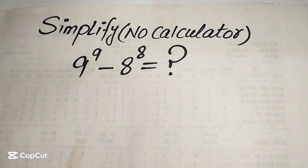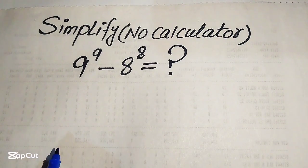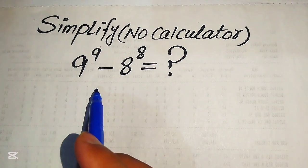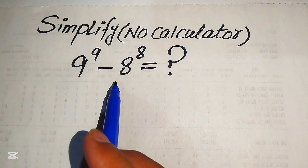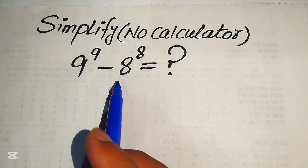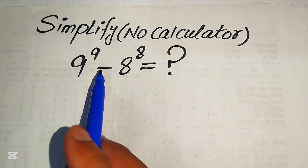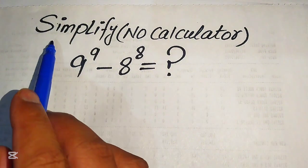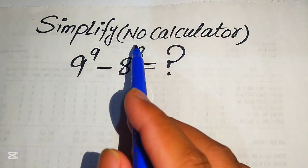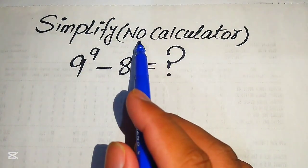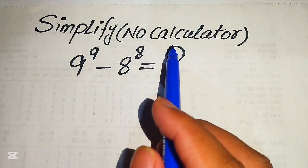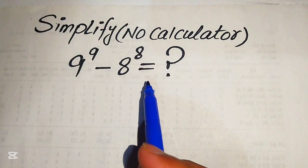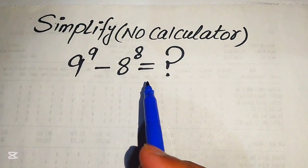Hello everyone, welcome to solve this nice math algebra problem. So here we have 9 to the power of 9 minus 8 to the power of 8 and we write this algebraic expression into the simplified form. Note that a calculator is not allowed in this problem, which means we need to show all of the working on paper.